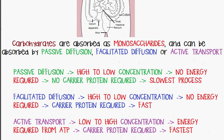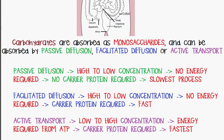Passive diffusion is the movement of molecules from high to low concentration. It doesn't require energy or a carrier protein, and it's the slowest process of the three. Facilitated diffusion is also from high to low concentration with no energy required, but it requires a carrier protein or transmembrane protein. This process is faster than passive diffusion.